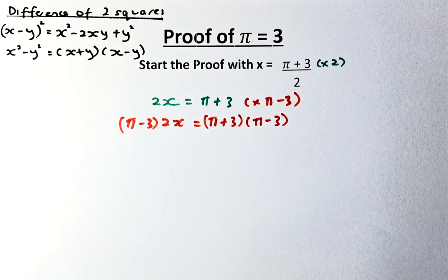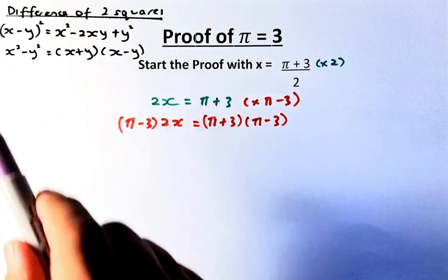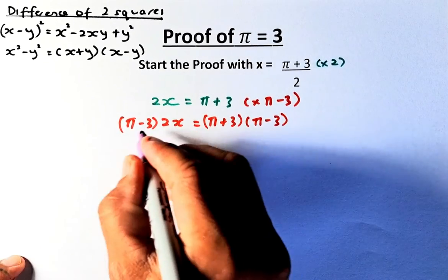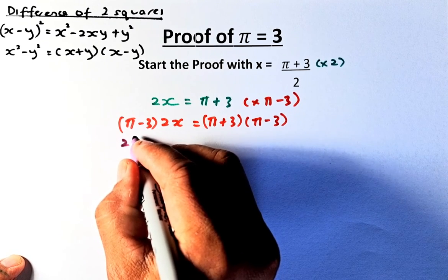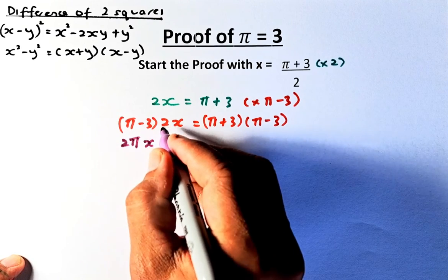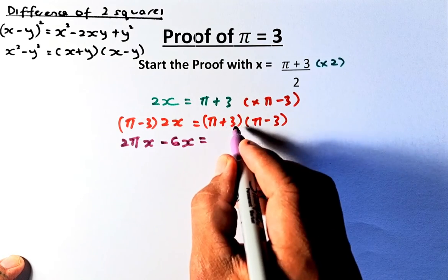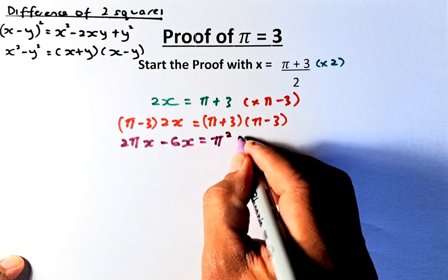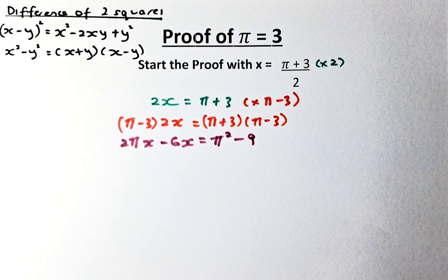We now use the second formula — x plus y times x minus y equals x squared minus y squared — and expand the left-hand side. This gives 2pi·x minus 6x. On the right-hand side, (pi plus 3)(pi minus 3) becomes pi squared minus 9, since x is pi and y is 3.